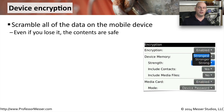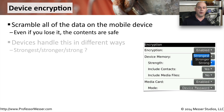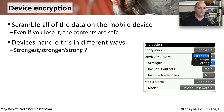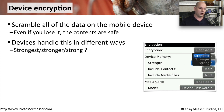We're generally storing a lot of information on our mobile devices — data from your organization, contacts — and all of that information is proprietary and private to your company. So many organizations will encrypt the data on all of these mobile devices so that if the device is lost or misplaced, the data will not be accessible to third parties. This screenshot from an Android operating system shows you can enable encryption in memory and set the memory strength to strongest, stronger, or strong.